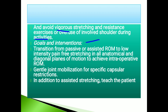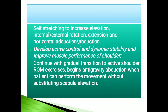Goals and interventions for the control motion phase: transition from passive or assistive range of motion to low-intensity pain-free stretching in all anatomical and diagonal planes of motion to achieve intraoperative range of motion. Use gentle joint mobilization in addition to assisted stretching. Teach the patient self-stretching to increase elevation, internal or external rotation, extension, and horizontal adduction or abduction. Develop active control and dynamic stability, and improve muscle performance of the shoulder. Begin anti-gravity abduction when the patient can perform the movement without substituting scapular elevation.